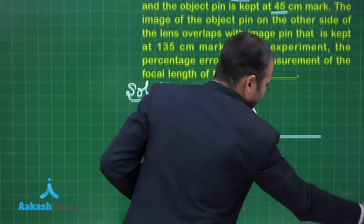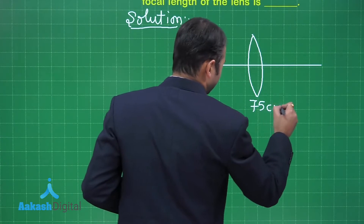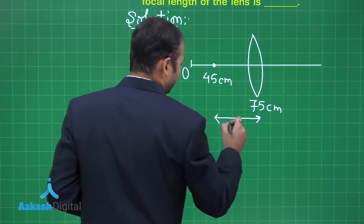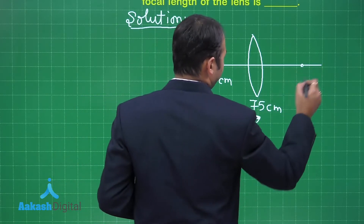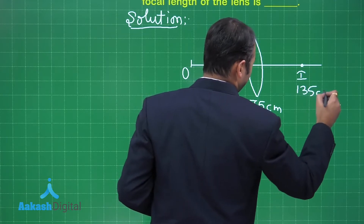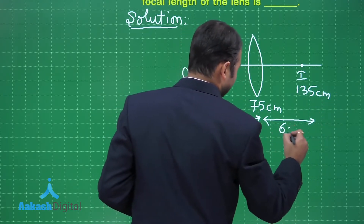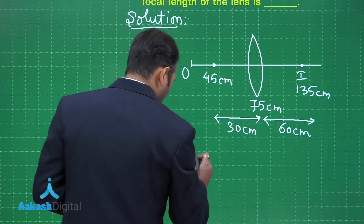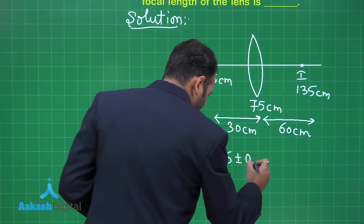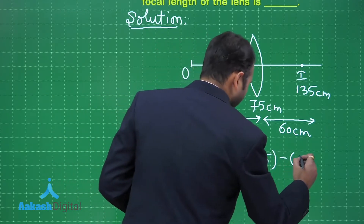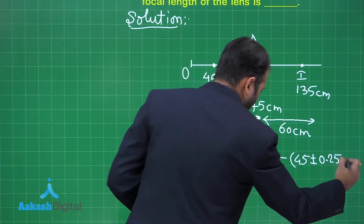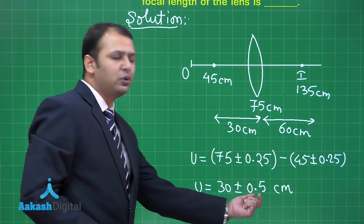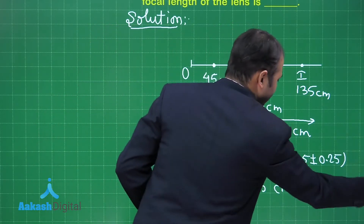The lens is at 75 cm and the object at 45 cm, so the magnitude of u = 30 cm. The image pin is at 135 cm, so v = 60 cm. For the error in u: u = (75 ± 0.25) − (45 ± 0.25), giving u = 30 ± 0.5 cm. So Δu = 0.5 cm and the mean value of u is 30 cm.